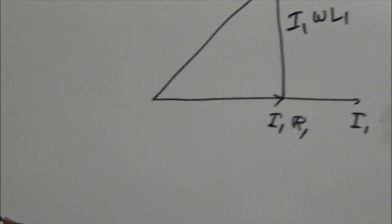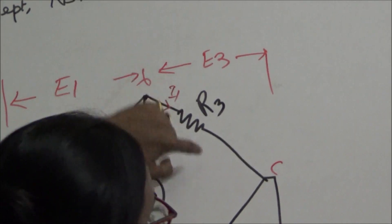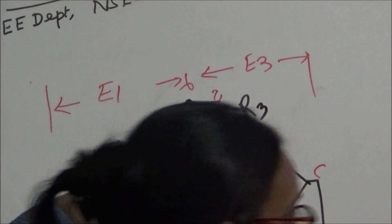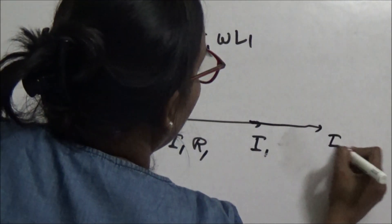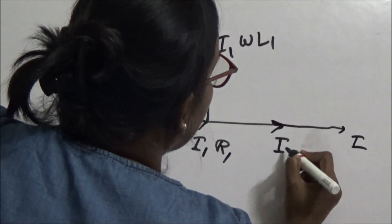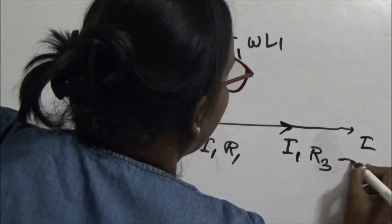Now here we can see E3. I1 times R3 is E3. This is E3. I1 R3 is equal to E3.